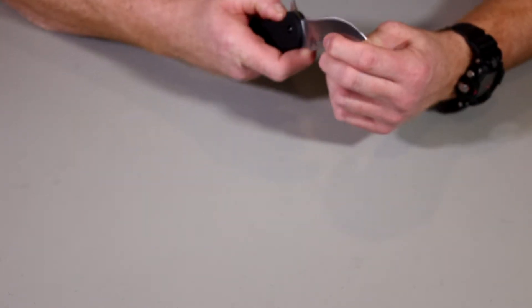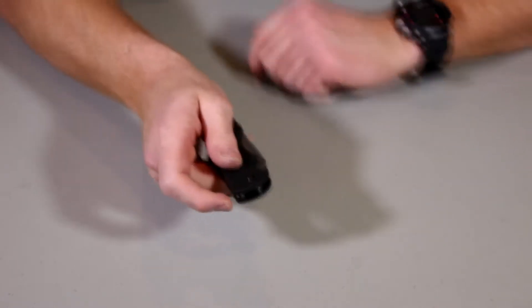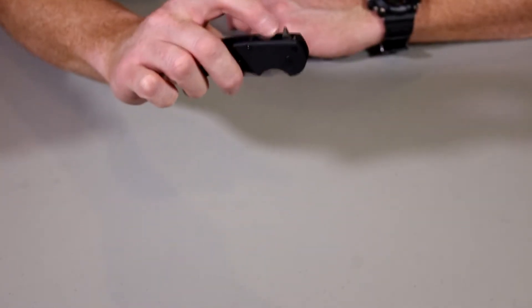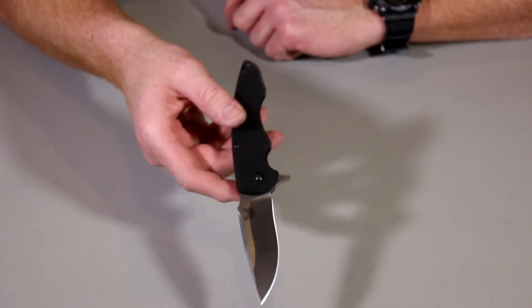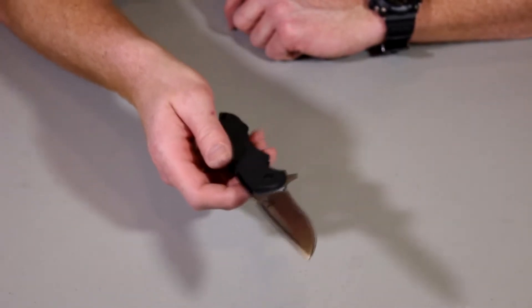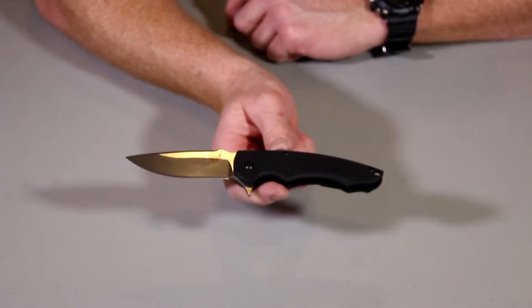Very easy opening. It's a liner lock. It's kind of a half liner really. So you get the little stud there in the back. Flipper stud. So just flicker open. It opens very very easy. Very quick. Rides on bearings. So nice little knife.